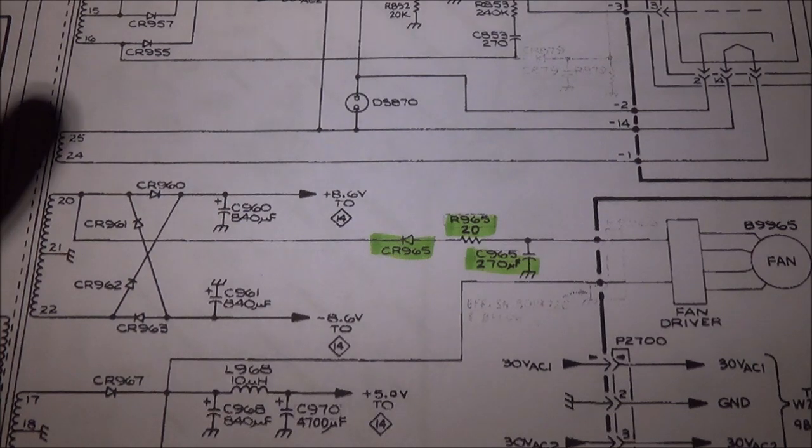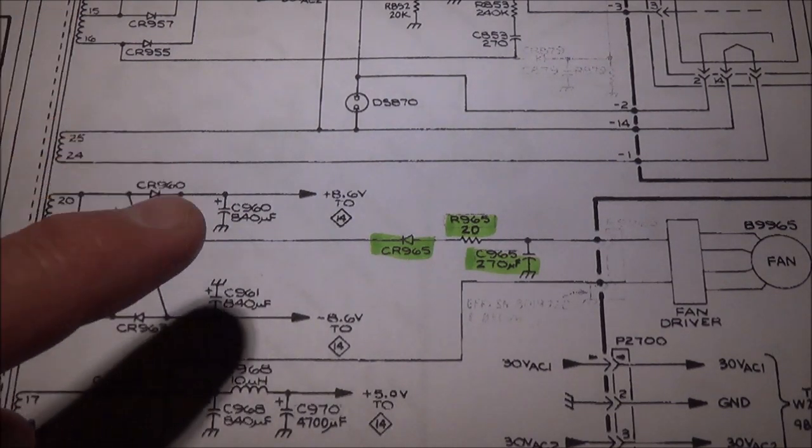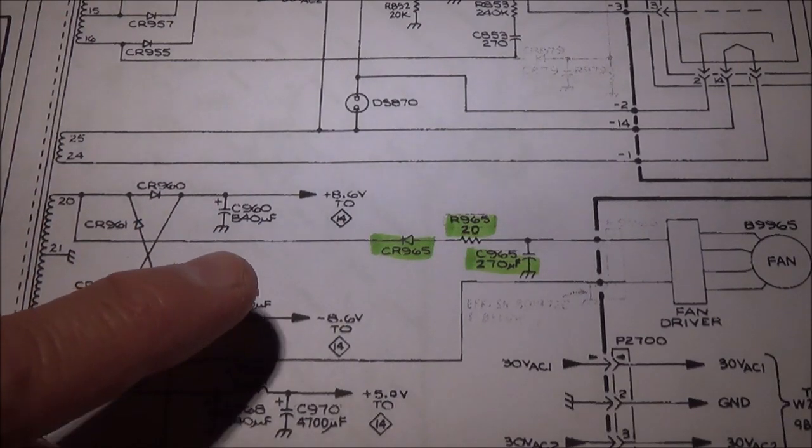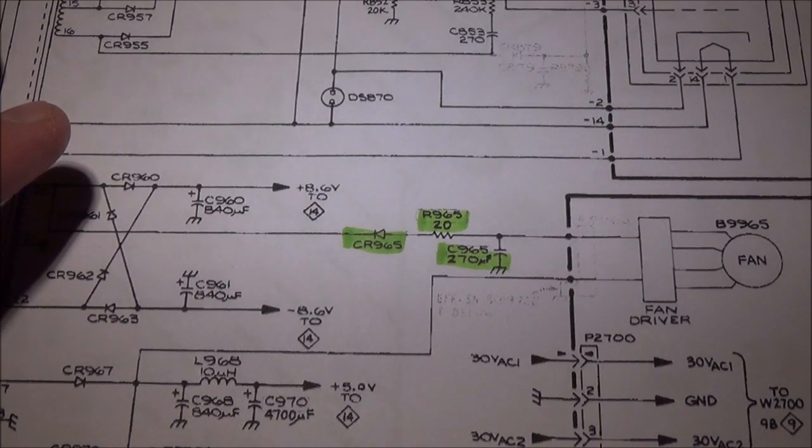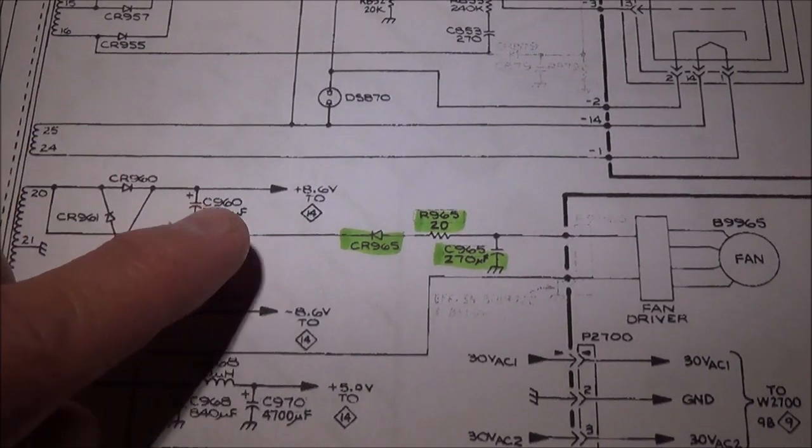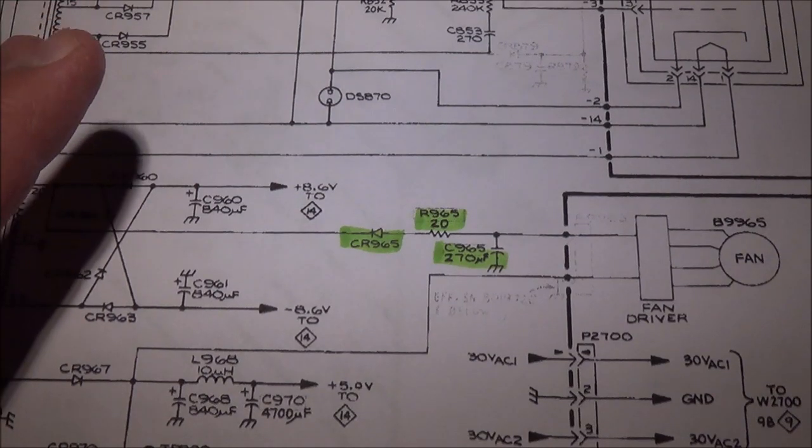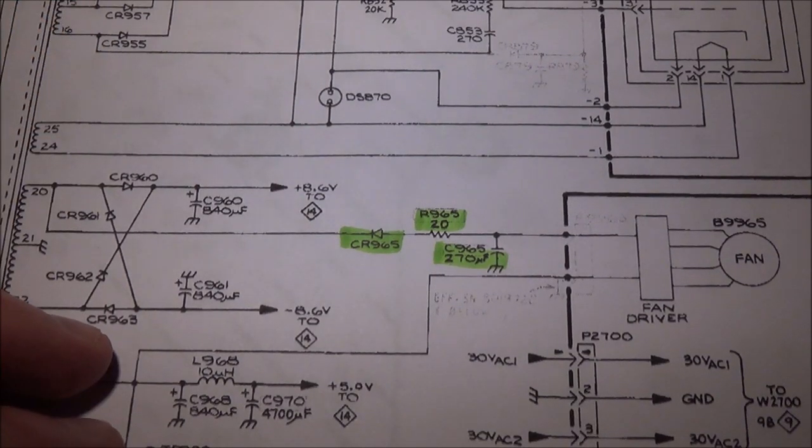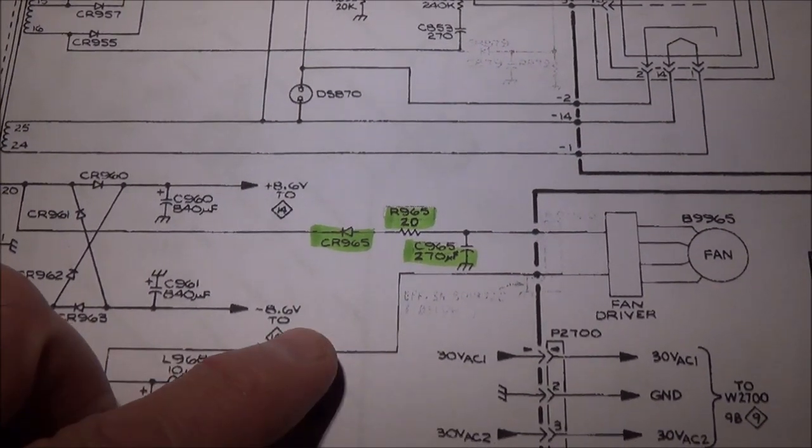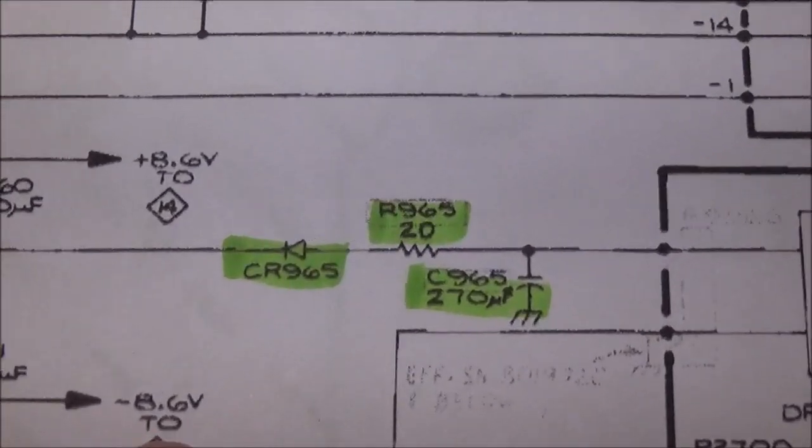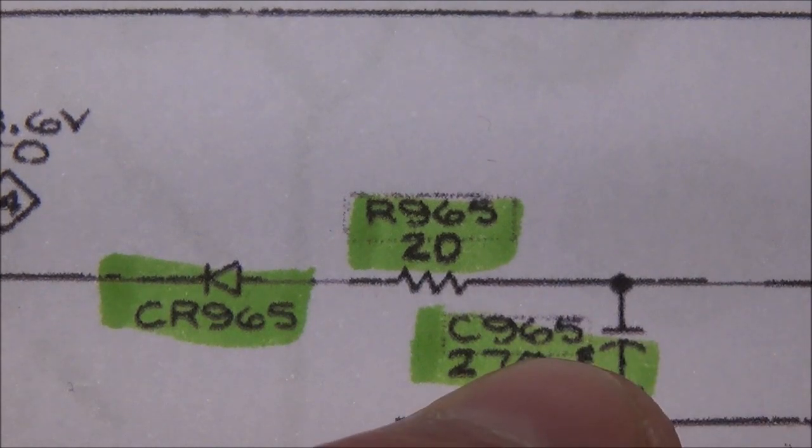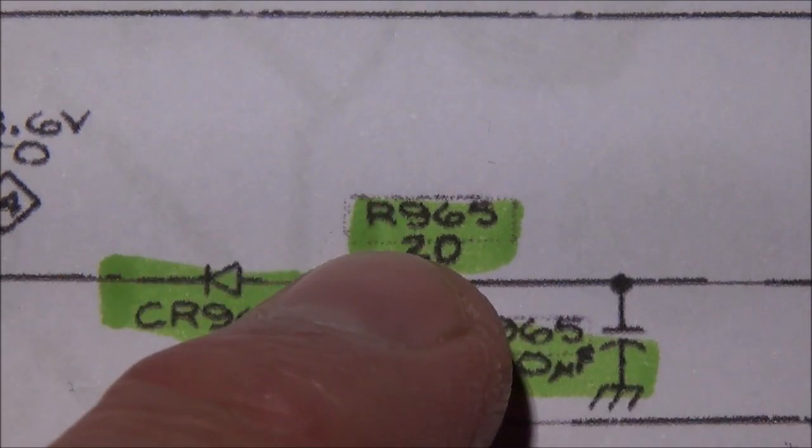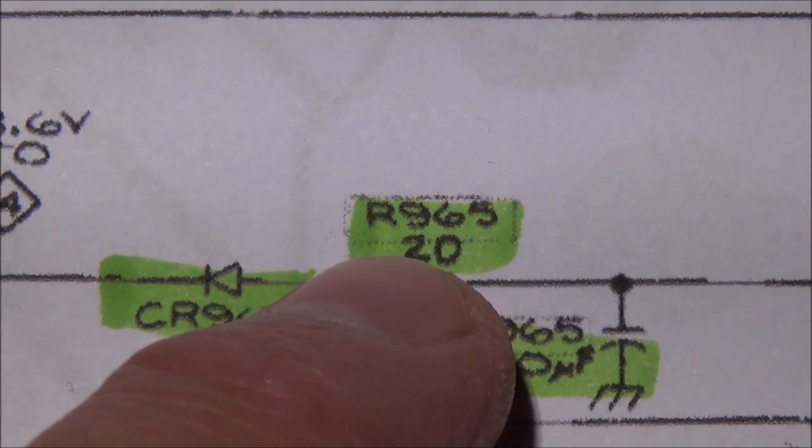The Tektronix 2236 I believe is the model number that's almost the same as the Tektronix 2235, except I think it has a counter and a meter in it. By comparing the power supplies I think they're about the same, so what I'm going to do is install three components here: a diode, an electrolytic capacitor, and a resistor.